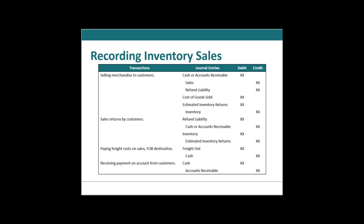When recording inventory sales, we have all of our cash that we received or expect to receive as a debit — so that $100. Our credit would be to sales net of what we expect to be returned, so $97, and then we expect $3 to be returned — that's our refund liability. You can do two separate journal entries: debit cash or accounts receivable $97 and credit sales $97, then debit cash or AR $3 and credit refund liability $3 — or you can do them net as one combined journal entry.